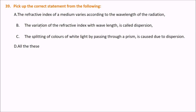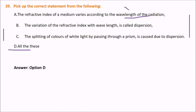Pick up the correct statement about refractive index. The answer is all of these: the refractive index of a medium varies according to the wavelength (lambda) of the radiation; the variation of refractive index with wavelength is called dispersion; and the splitting of colors of white light by a prism is caused by dispersion.